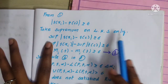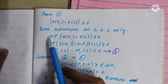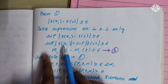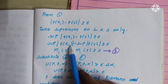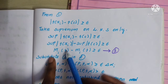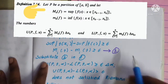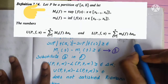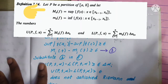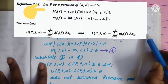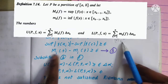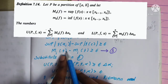Now let's take the supremum on the left-hand side. We need the supremum of |f(x_i) - f(c)| >= epsilon. That gives us the supremum of f(x) on [x_{i-1}, x_i], which is M_i(f). Applying this formula: M_k(f) = supremum of f(x) for x in [x_{k-1}, x_k].